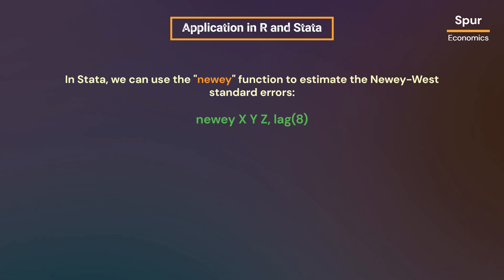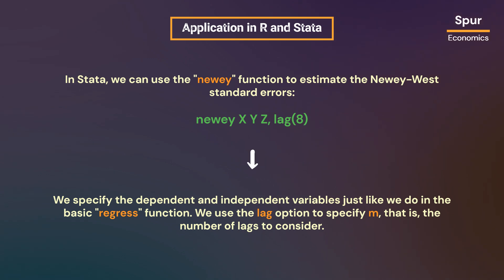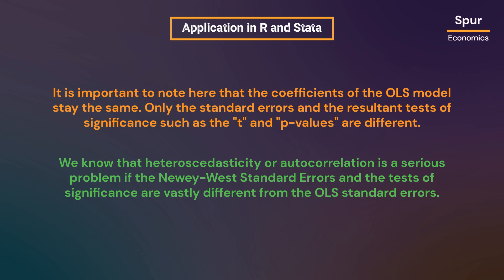In Stata, we can use the newey function to estimate the Newey-West standard errors. We specify the dependent and independent variables just like in the basic regress function, and use the lag option to specify M, the number of lags to consider. It is important to note that the coefficients of the OLS model stay the same — only the standard errors and the resultant tests of significance, such as the t and p values, are different. We know that heteroscedasticity or autocorrelation is a serious problem if the Newey-West standard errors and tests of significance are vastly different from the OLS standard errors.